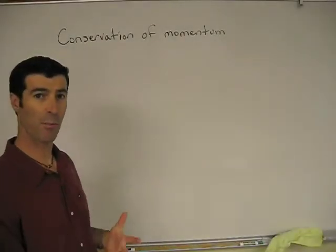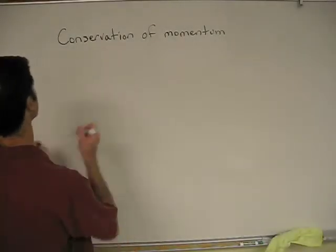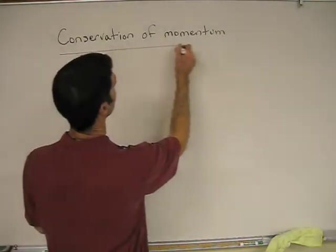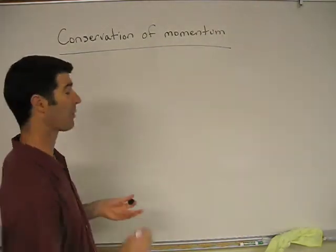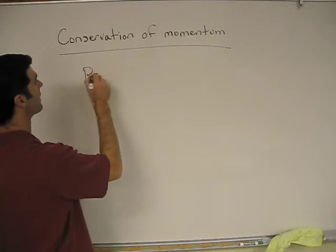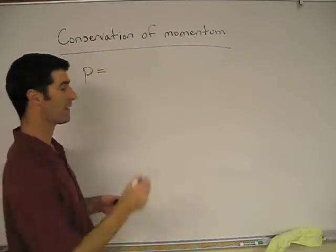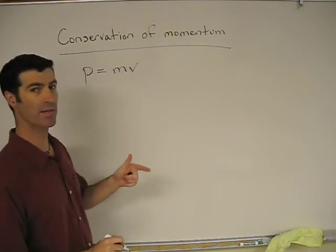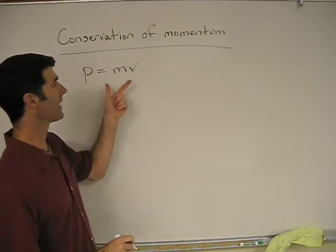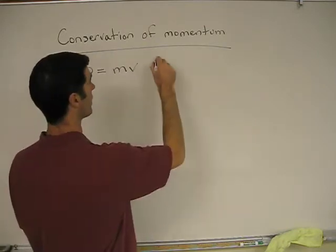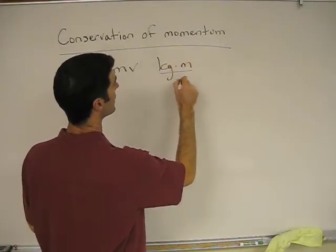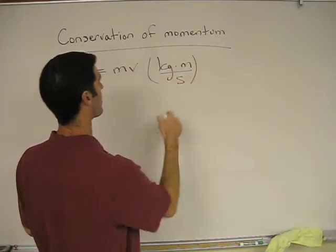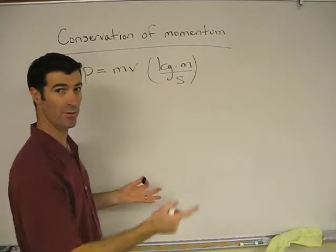Alright, conservation of momentum. Momentum is given the variable p, and the formula is mass times velocity. So momentum is mass times velocity. It's given in the unit of kilogram meter per second, which is just mass times velocity. Very straightforward.